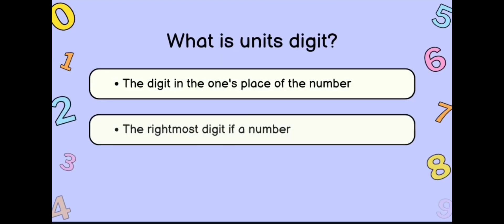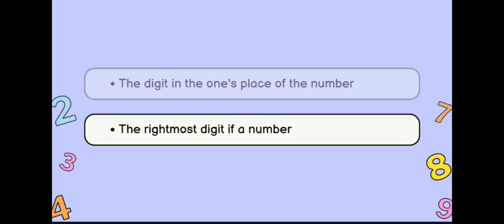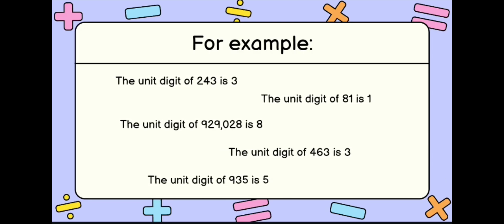So what is a unit digit? The unit digit is the digit in the ones place of a number — the rightmost digit. Some examples: the unit digit of 243 is 3, the unit digit of 81 is 1, the unit digit of 929,028 is 8, the unit digit of 463 is 3, and the unit digit of 935 is 5. It's quite easy, right?